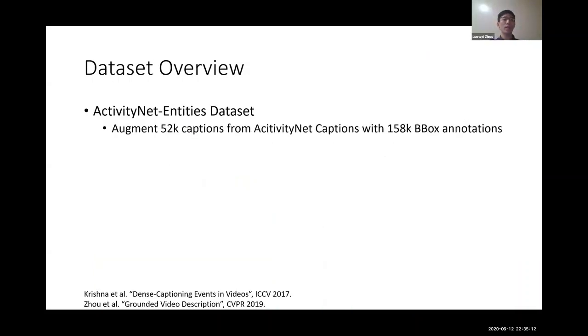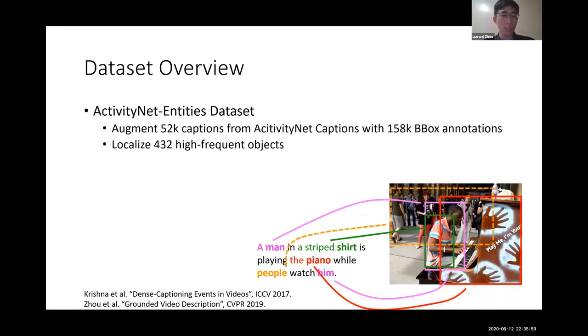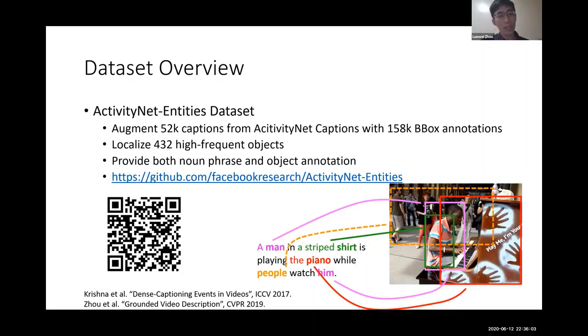And for the dataset, we use ActivityNet Entities, which is proposed by us at CVPR 2019. And it augments the 52,000 captions from the ActivityNet Captions dataset, which was covered in the previous session of this workshop. And we augment that dataset with 158,000 bounding box annotations. And we locate 432 high frequency objects in the dataset. So one quick example is here. So given a sample frame from the video and the corresponding caption like this, we recognize all the objects and noun phrases and then locate them in the image in the video. And we provide both the noun phrase annotations and the object location annotations. So you can download the data with this link or scan the QR code.